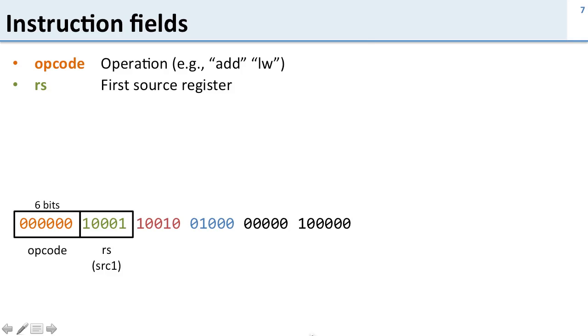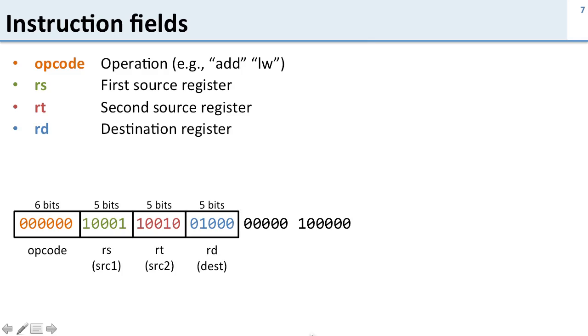Then we have the first source register, which is five bits, the second source register, which is five bits, and finally the destination register, which is five bits.